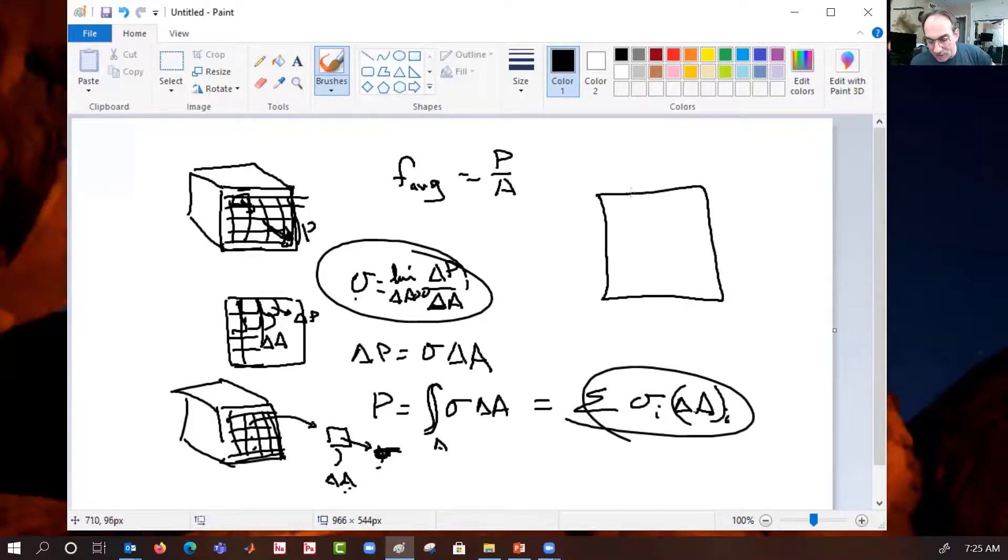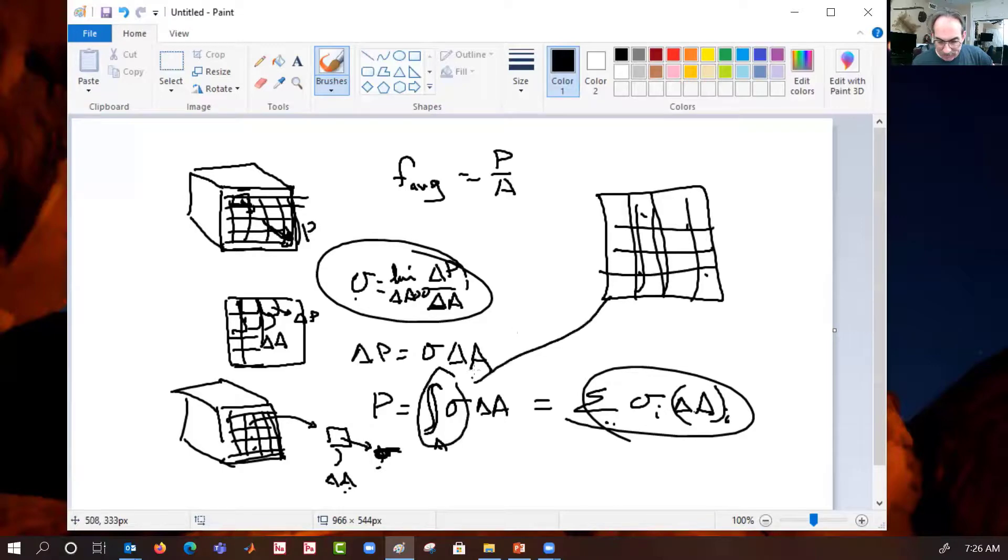You can do this discreetly by saying, let's break this up into four blocks. Then our summation would have four pieces, or more, or more. What this integral does is say we're going to break it up continuously for all little increments of stress, all little increments of area. And that's what this integral does. That gives us the total force on the section.